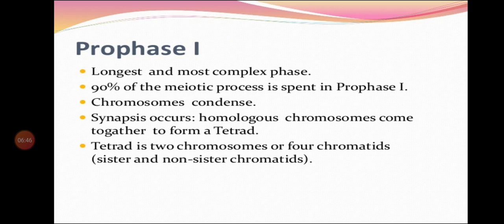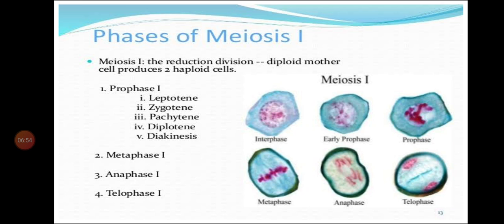Let us start with prophase 1. Meiosis 1 consists of phases: prophase 1, metaphase 1, anaphase 1, telophase 1, and cytokinesis 1. Prophase 1 is the longest and most complex phase — 90% of the meiotic process is spent in prophase 1. Chromosomes are condensed in this phase, and synapsis occurs, meaning homologous chromosomes come together to form a tetrad.